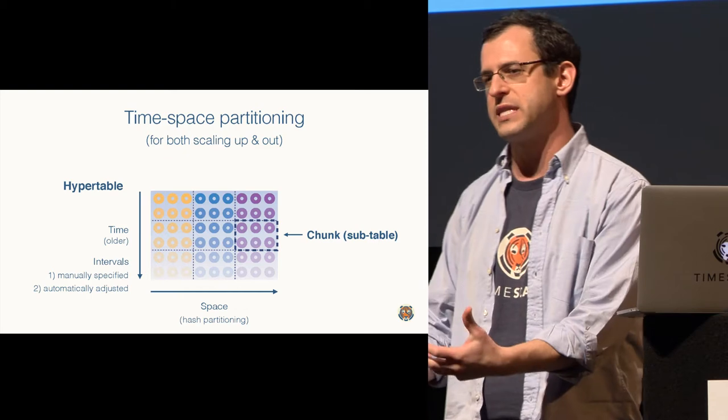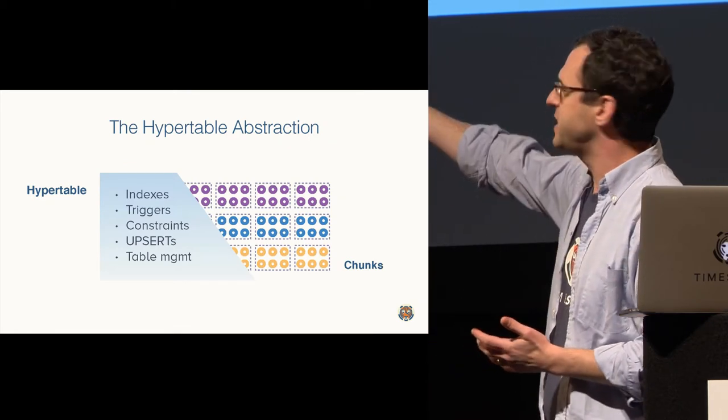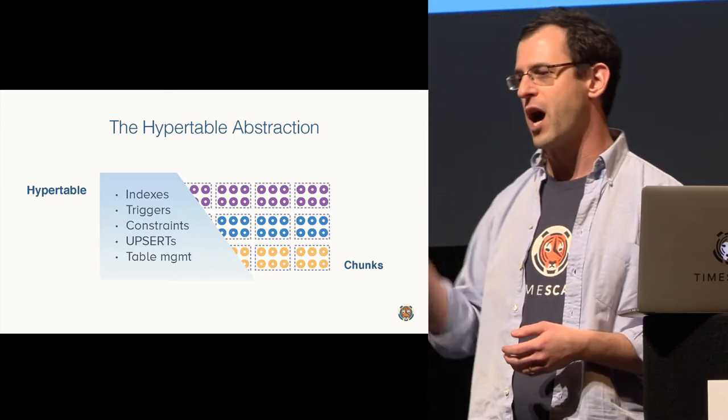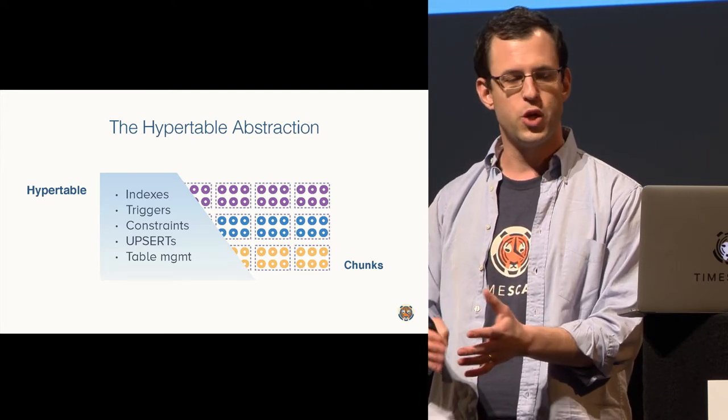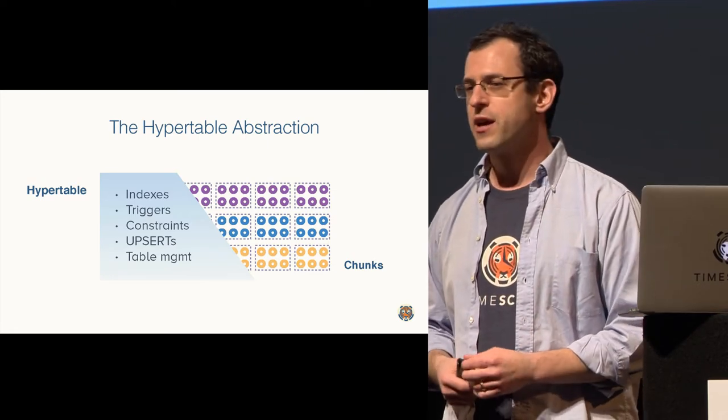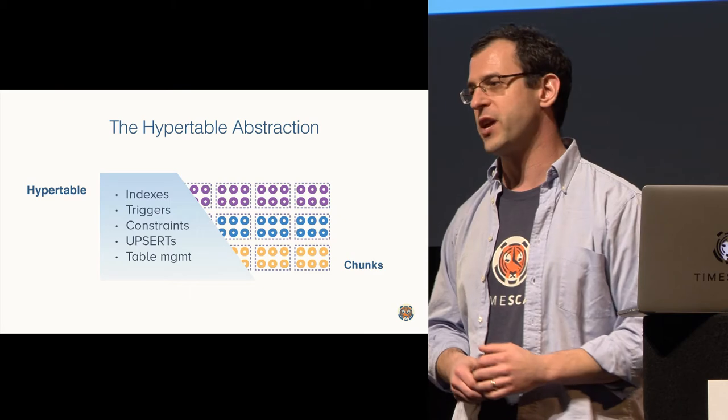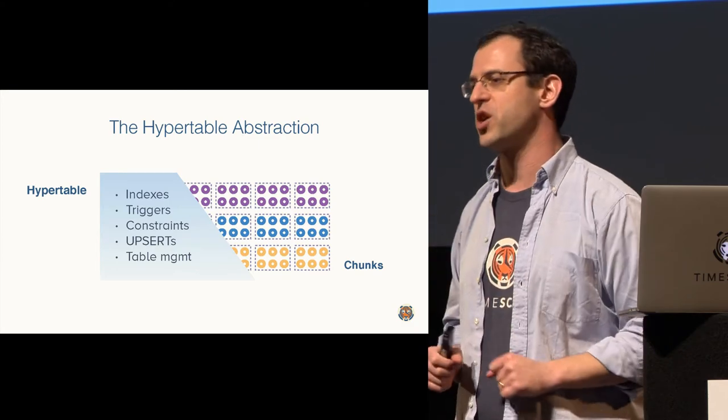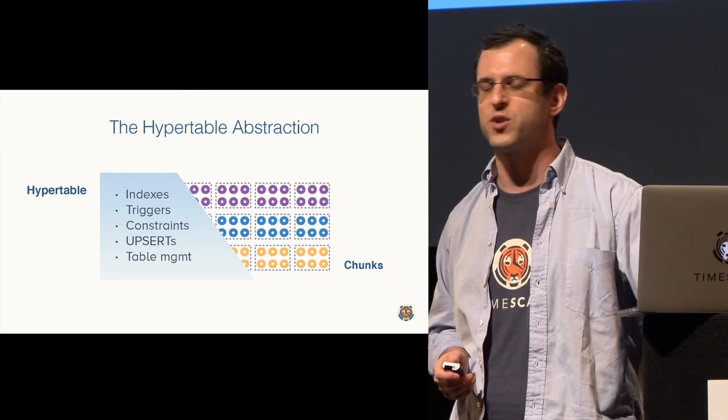We call these chunks. What they are stored at the lowest level is actually just an internal table inside Postgres. But from the outside world, the user will only see this hypertable. Your inserts and your queries and your constraints and your triggers and your upserts and anything else you deal with the database will actually all be done by the hypertable. You won't be dealing with chunks at all.